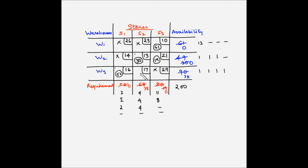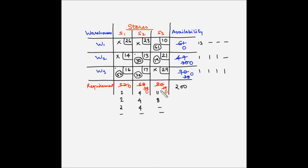The last square available for allocation is W3S2. W3 has a supply availability of 38 units while S2 has a demand of 38 units. So we allocate 38 units to this square. With this allocation, the remaining demand at S2 becomes 0 and the remaining supply at W3 also becomes 0. All supply and demand allocations are now complete.